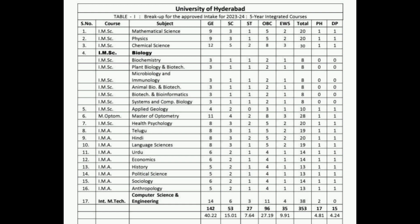GE means general. Total number of seats are 142 in 17 courses. There are different courses: Mathematics, Chemical Science, Microbiology, Hindi, Urdu, Economics. Economics has 6 seats. So if your general rank is 20, you should definitely come.